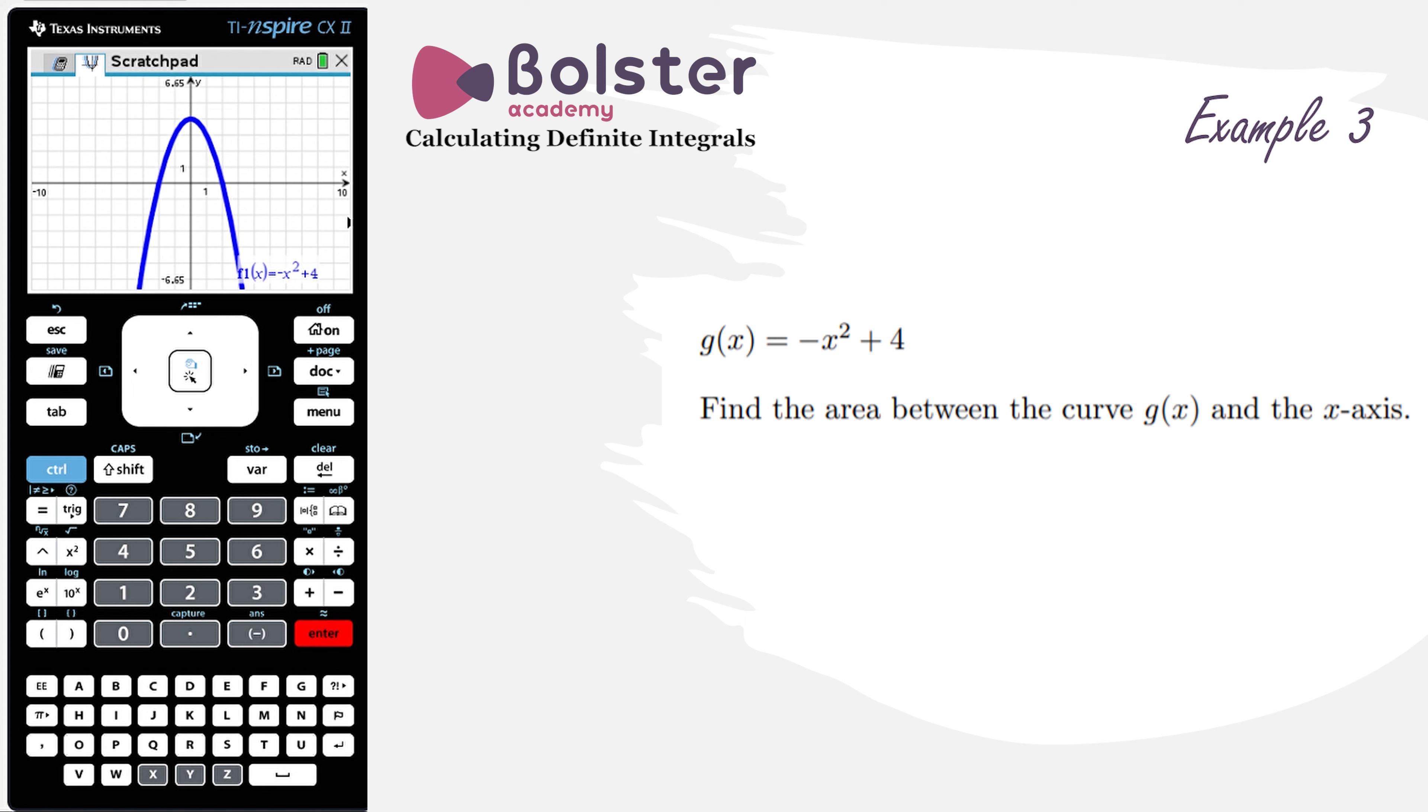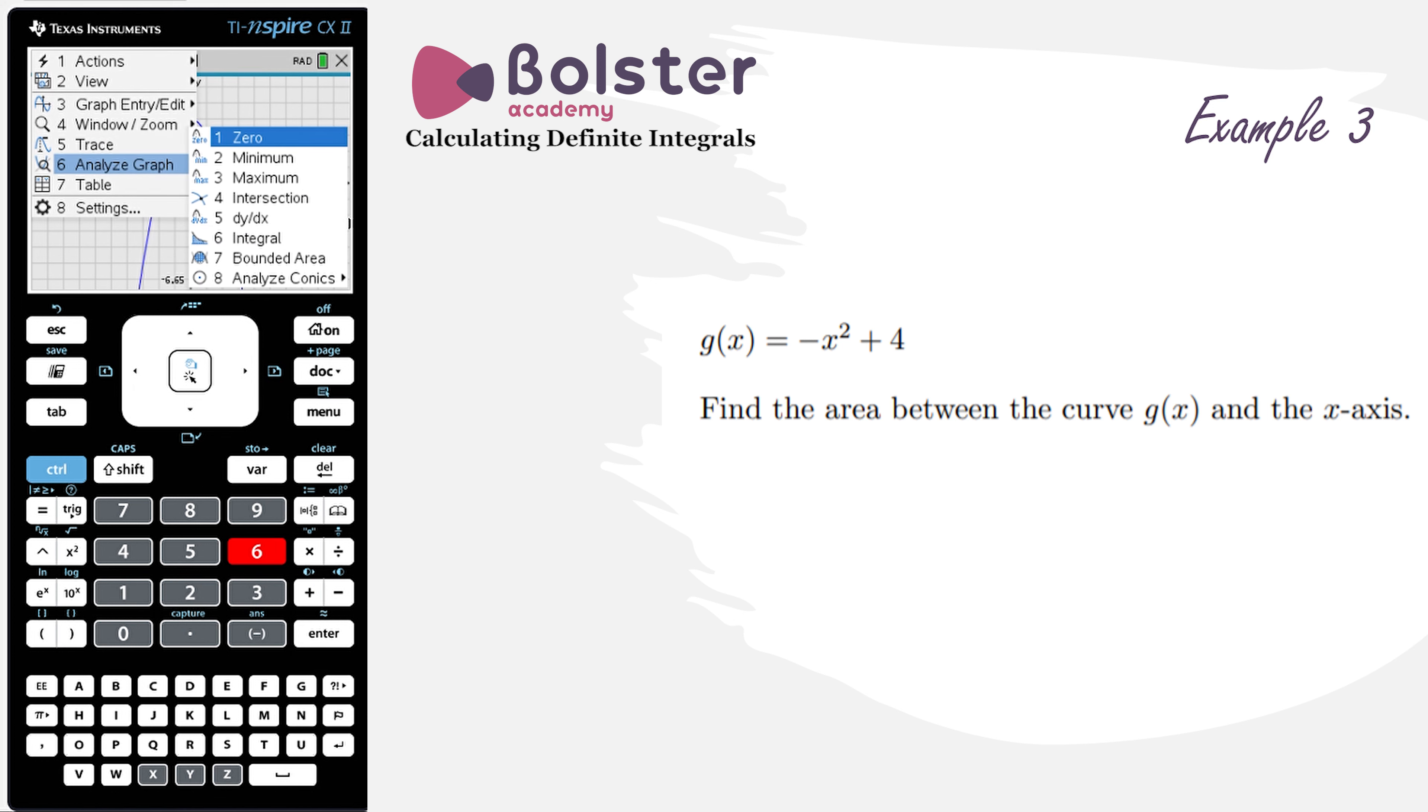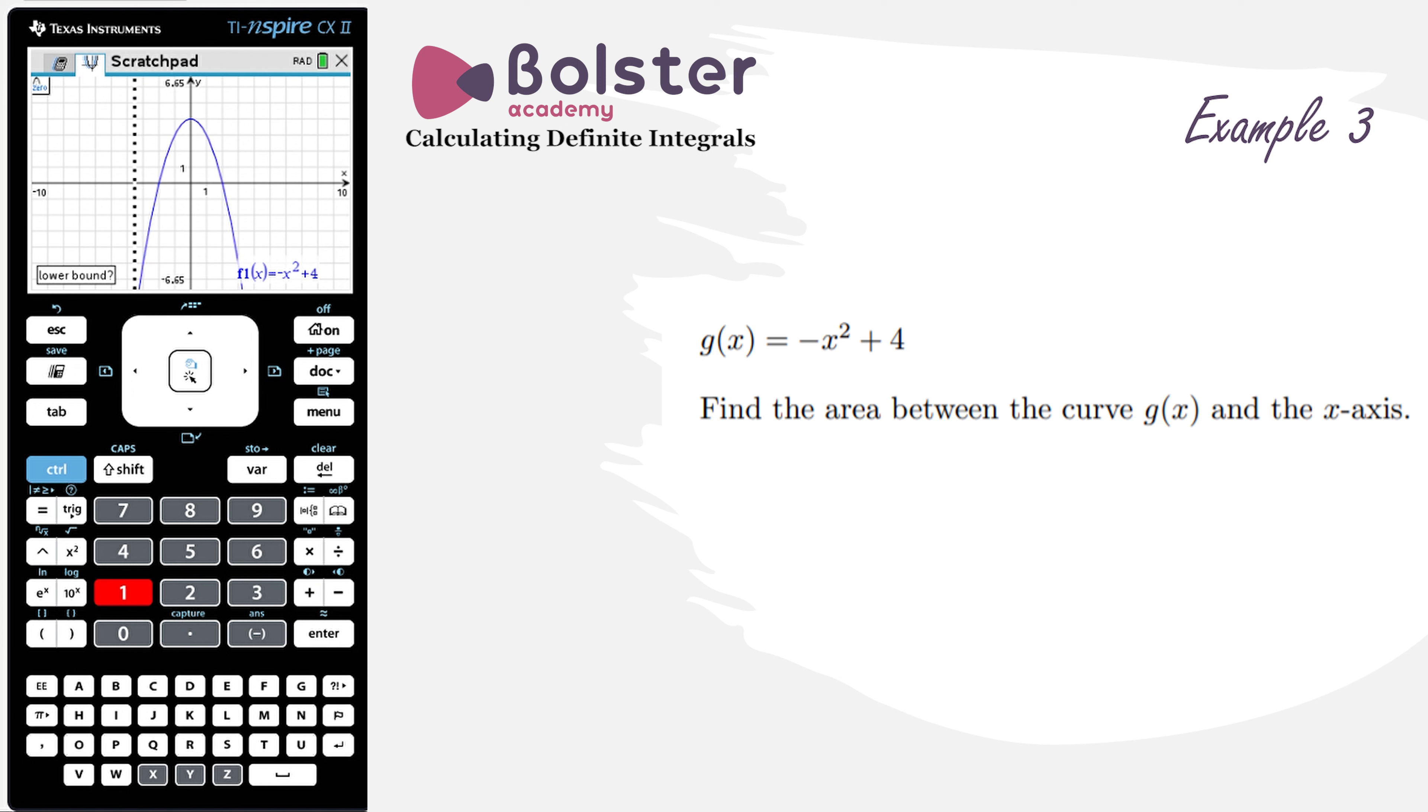So we do that by going into Menu, we go Analyze Graph, and we want to get zeros of the function, so option number 1. Choose my upper and lower bounds appropriately, and I've got my first zero at minus 2.